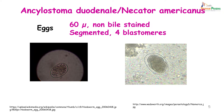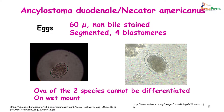Coming to the morphology of Ankylostoma duodenale and Necator americanus, their eggs or ova are 60 microns in size, non-bile stained, segmented, and show the presence of 4 blastomeres. It is difficult to distinguish the eggs of both worms in a wet mount, though there have been reports that eggs of Tenia saginata are acid fast; however, more studies need to be done.